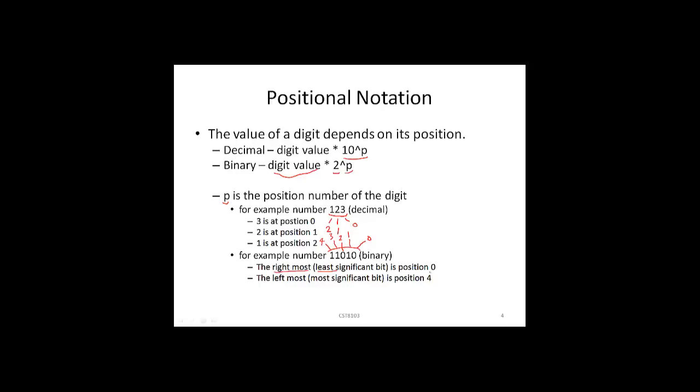The rightmost, or least significant bit, is position 0, and the leftmost, or most significant bit, is position 4.